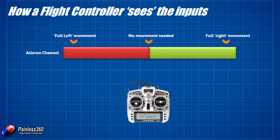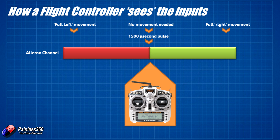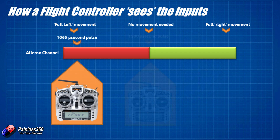So if we overlay that, the way it works is that if the flight controller can see 1500 on whatever control you're looking at — for things like the rudder, aileron, and elevator — that is considered to be no movement at all. If it's nearly 2000, it's full movement in the right direction, and if it's near 1000, it's full movement in the other direction. So here we have our aileron control right in the very middle, and if that is sending 1500 microseconds to the flight controller, it will see that as you not wanting to go in any direction or change the attitude of the craft at all.